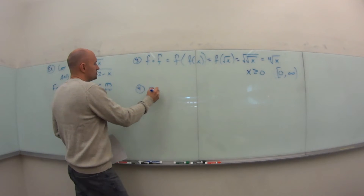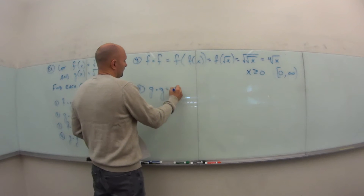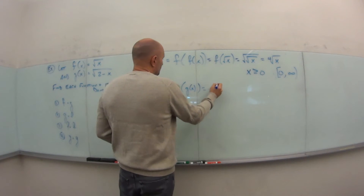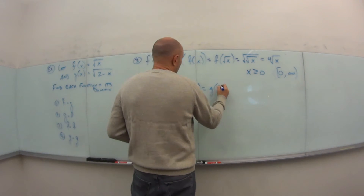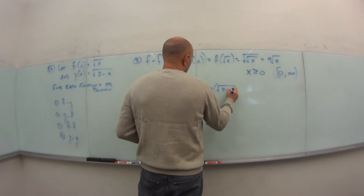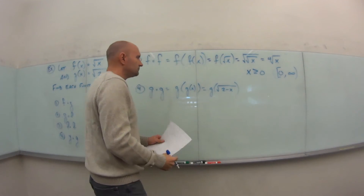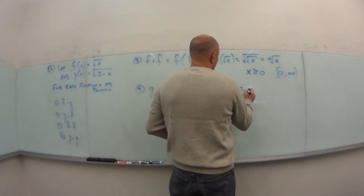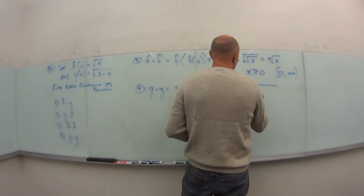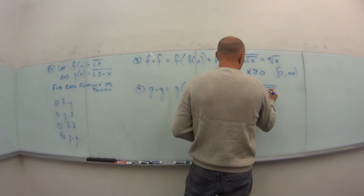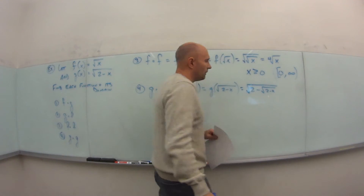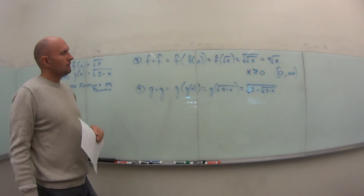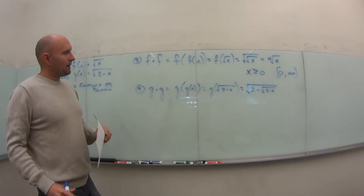For number 4, g∘g means g of g(x), which is g(√(2 − x)). Plugging that into g gives us √(2 − √(2 − x)). Pretty messy.